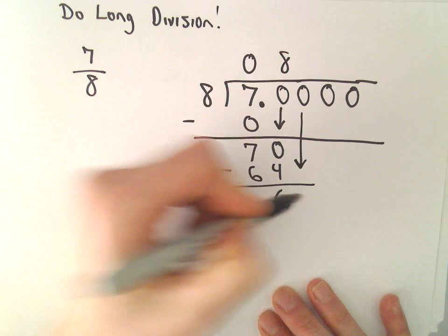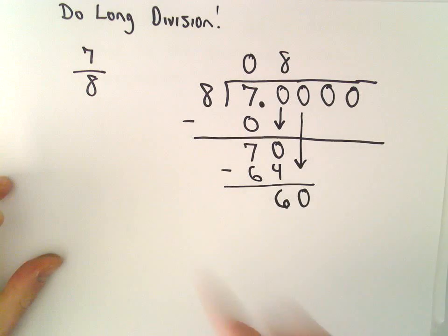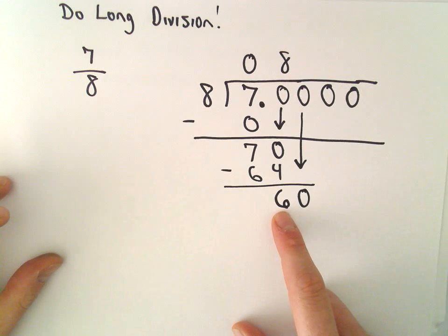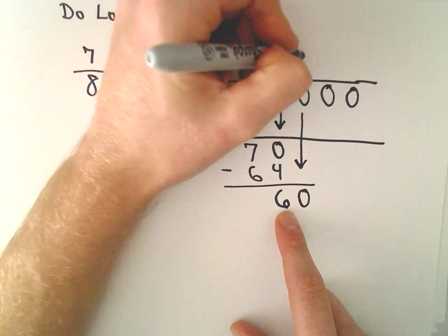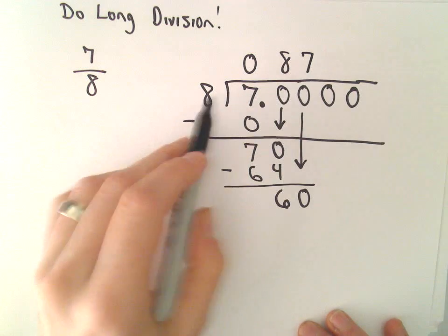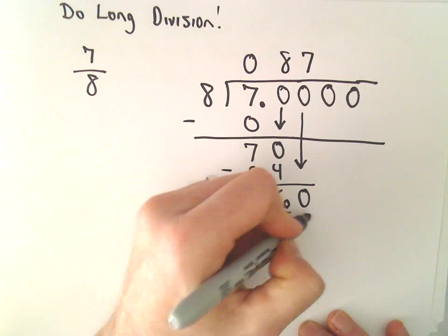We can drop down our zero. So now, eight will go into sixty seven times. Seven times eight will be fifty-six.